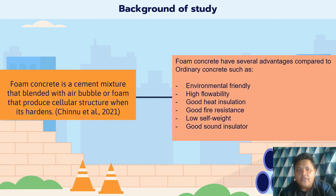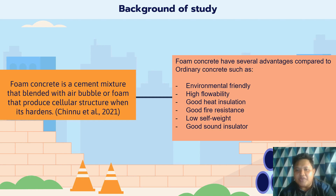First, we look at the background of study. Foam concrete is a cement mixture blended with bubbles or foam that produces a cellular structure when it hardens. Foam concrete has several advantages compared to ordinary concrete, such as being environmentally friendly, having high flowability, good heat insulation, good fire resistance, low self-weight, and being a good sound insulator.